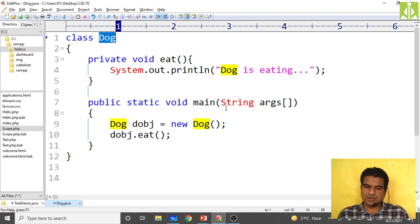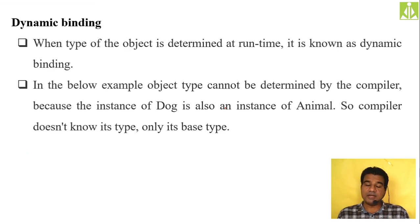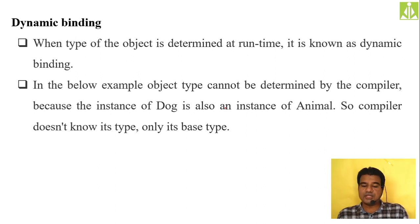So everything done so far — object creation and method resolution — happens at compile time, which is static binding. Then what is dynamic binding? When the type of the object is determined at the time of run, or at the time of execution, it is known as dynamic binding. In the next example, the object type cannot be determined by the compiler because the instance of dog is also an instance of animal.